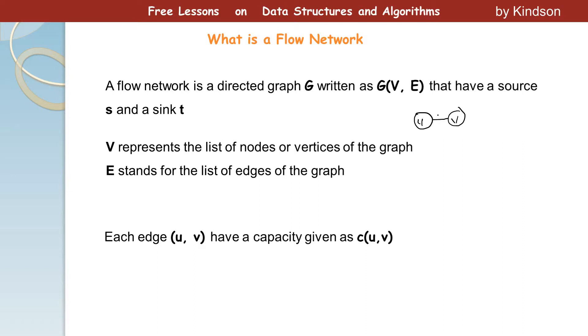So this edge here is given as (u, v). Right? So we can just make it a little clear. So this is u and this is v. So we have an edge joining u to v. And we are saying that it is a directed graph. When the graph is directed, it means that it has a direction. Right?